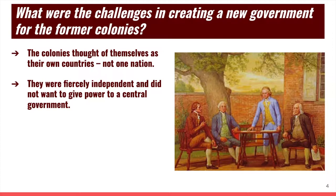They had fiercely independent identities, and they did not want to give power to a central government. Each colony — each state now — had its own ideas, its own beliefs, its own culture, its own way of doing things, and none of them particularly wanted some powerful central force telling them what to do. In fact, it was because the British were a powerful central force that tried to tell the colonies what to do that the Revolution was fought in the first place. So they did not want to replicate a system that would basically do the same thing in different clothes.